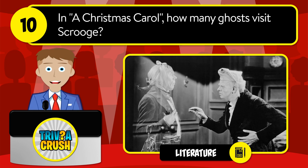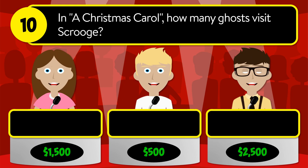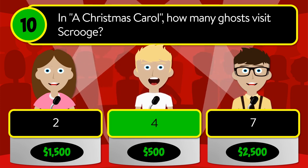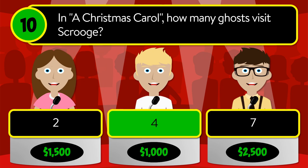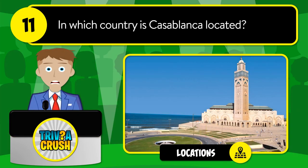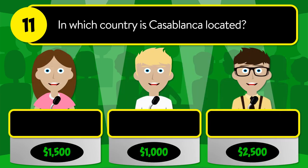Question number ten: in A Christmas Carol, how many ghosts visit Scrooge? Was it 2, 4, or 7? The correct answer is 4.